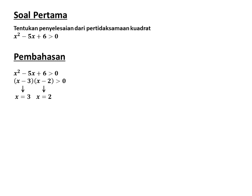Selanjutnya, buat garis bilangan dengan menempatkan akar yang lebih kecil di sebelah kiri. Berarti 2 ada di sebelah kiri dan 3 di sebelah kanan. Karena tanda ketidaksamaannya lebih dari (tidak mengandung sama dengan), maka bulatan pada akar 2 dan 3 kita kosongkan.